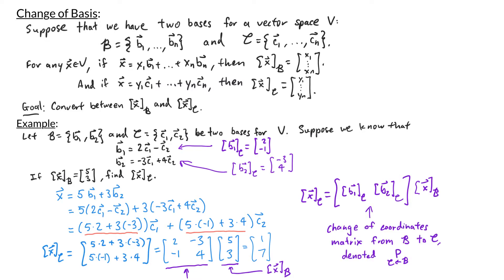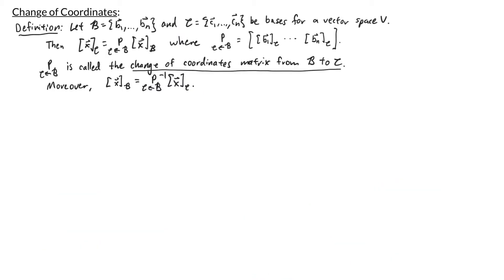The matrix whose columns are the c-coordinates of the basis vectors b1 and b2 is called the change of coordinates matrix from b to c. Formally, if we have two bases b and c, the c-coordinate vector for x equals the matrix P(b to c) times the b-coordinate vector for x, where P(b to c) has columns consisting of the c-coordinate vectors for b1 through bn. To convert the other way, the b-coordinate vector for x equals P(b to c) inverse times the c-coordinate vector for x.